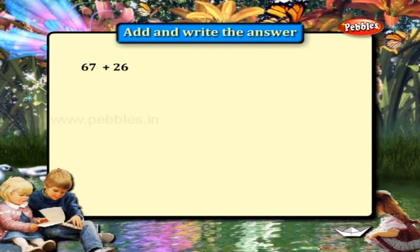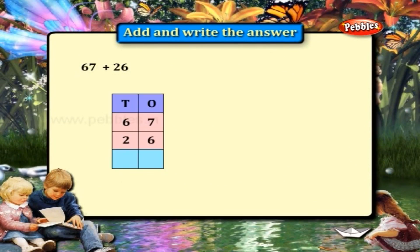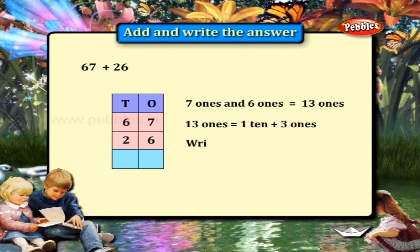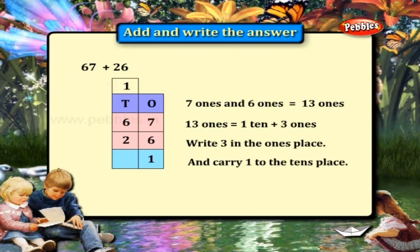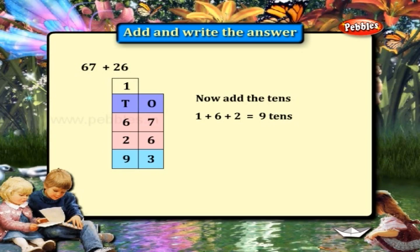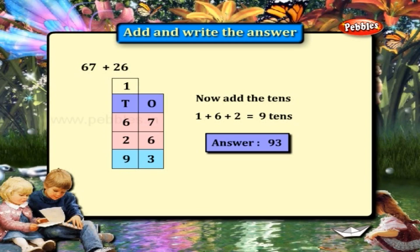67 plus 26. Add the ones — 7 and 6, we get 13. Change 13 ones to 1 ten and 3 ones. Write 3 in the ones place and carry 1 to the 10's place. Now add the 10's: 1 plus 6 plus 2 is equal to 9. The answer is 93.